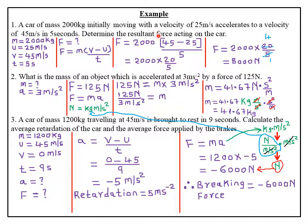We are required to determine the resultant force acting on that particular car. The resultant external force, as we saw in Newton's second law of motion, is denoted by capital F. After identifying what we want, you look at the equation that utilizes all the quantities you have been provided and the quantity you need. The most appropriate formula that utilizes m, u, v, t, and F is the statement of Newton's second law of motion: the external force F equals the rate of change of momentum, so F equals m times (v minus u) over t.